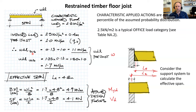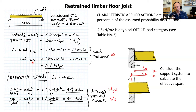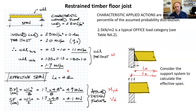Adding these: the serviceability limit state (SLS) total is 1.1 kN/m. For ultimate limit state (ULS) strength we apply Eurocode partial factors — 1.35 for permanent and 1.5 for variable load — giving a design UDL of 1.7 kN/m.